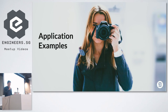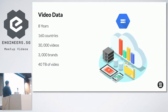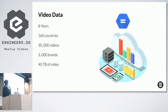Thanks to Tommy and Aaron who built the infrastructure and foundations — we were able to leverage AI and machine learning to give impact to the business. We have a lot of video data: 8 years, 160 countries, 30,000 videos, 40 terabytes of video. The structured data we have includes the video brief, the creatives involved, and industry. The unstructured data is the video itself. We use the Video Intelligence API to extract structured data from the unstructured videos.